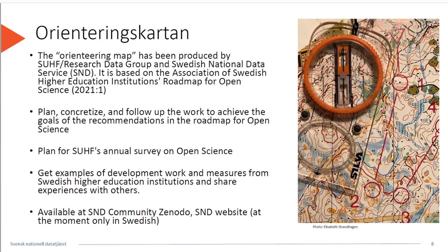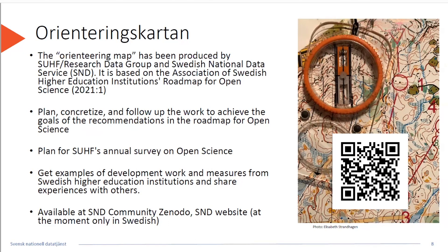I would also like to mention the Orienteering Map — it's called Orienteringskatan in Swedish. It's an Excel tool produced by the Research Data Group within the association and the Swedish National Data Service. It is based on the Association of Swedish Higher Education Institutions' roadmap and the guide with the proposals. The tool can be used to plan, concretize, and follow up the work to achieve the goals of the recommendations, and also to plan for the annual survey. It provides examples of development work and measures from different universities and university colleges. The latest version was uploaded just recently and is available on SND's website, currently in Swedish only but will be translated into English soon.